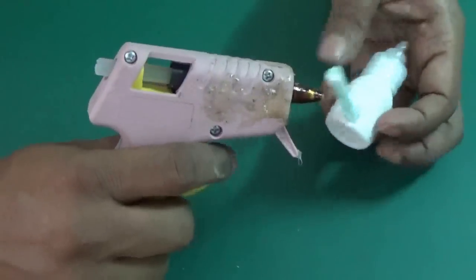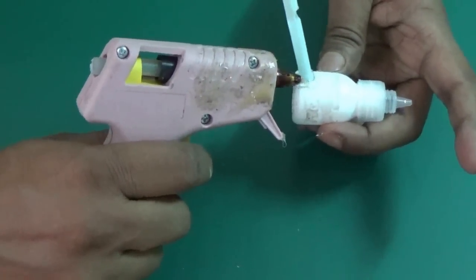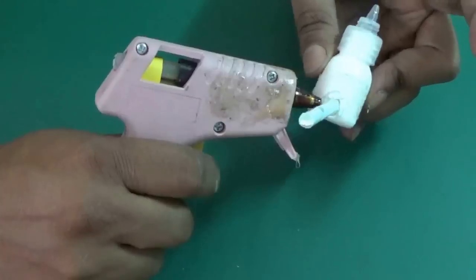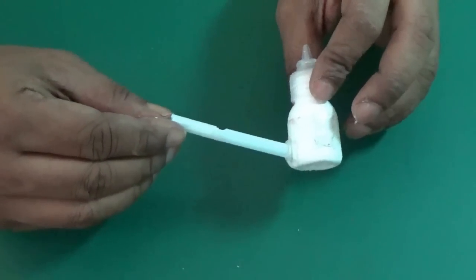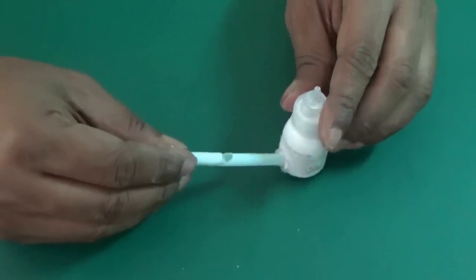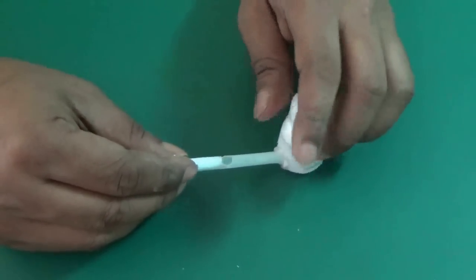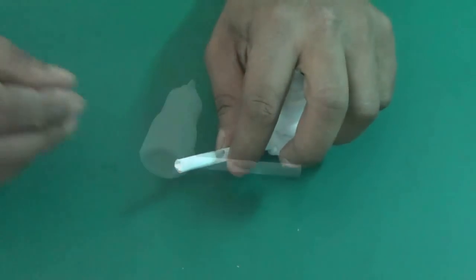Put enough glue to stick it there. Make sure the pipe is facing little upwards. Let it dry.